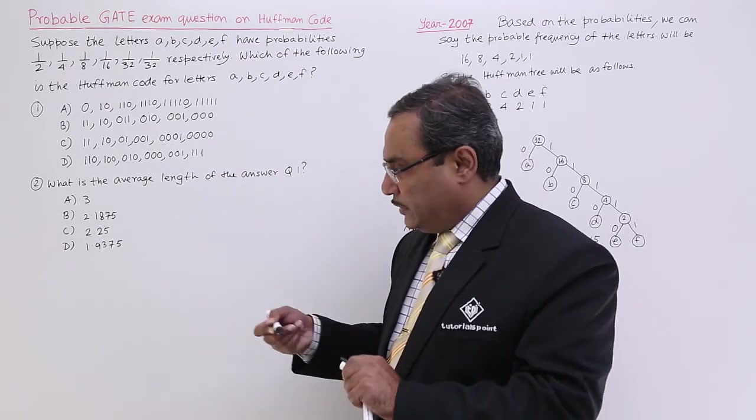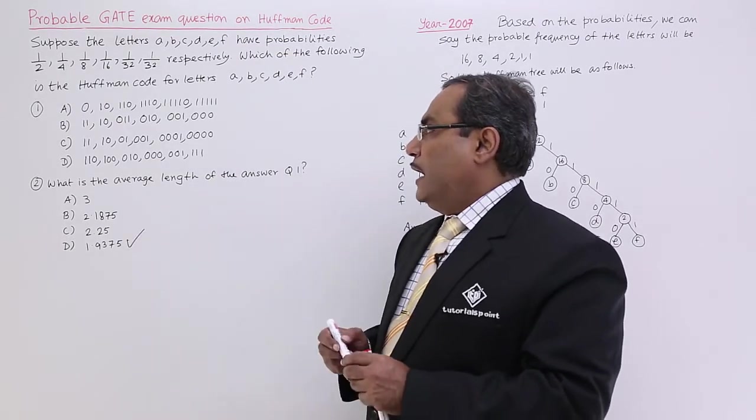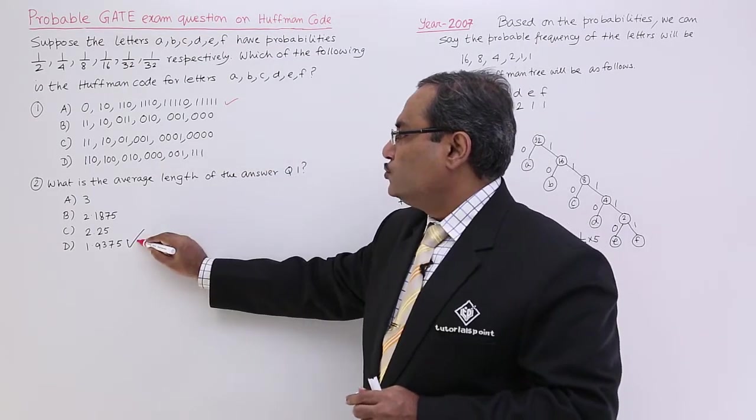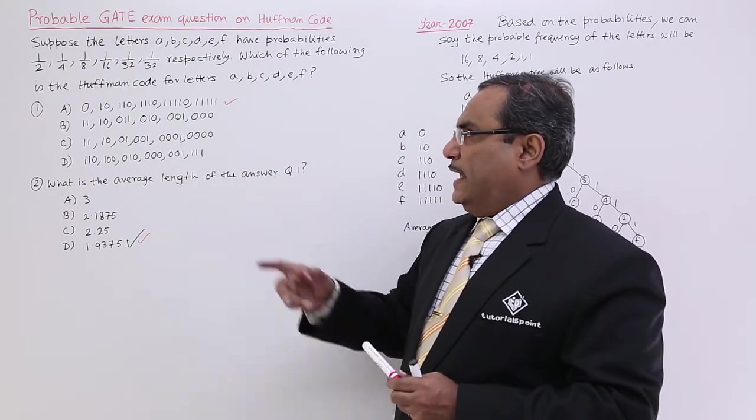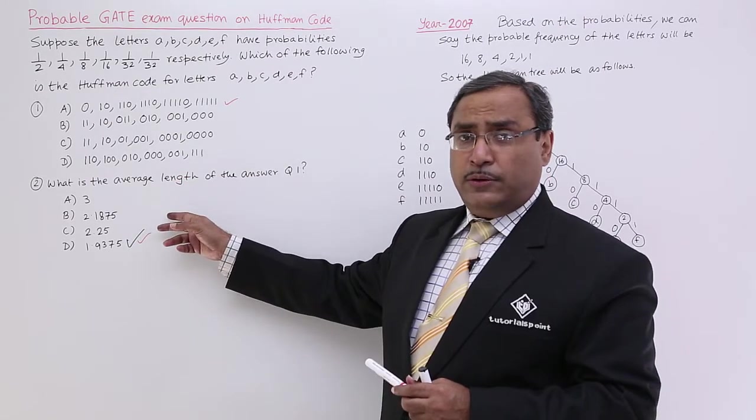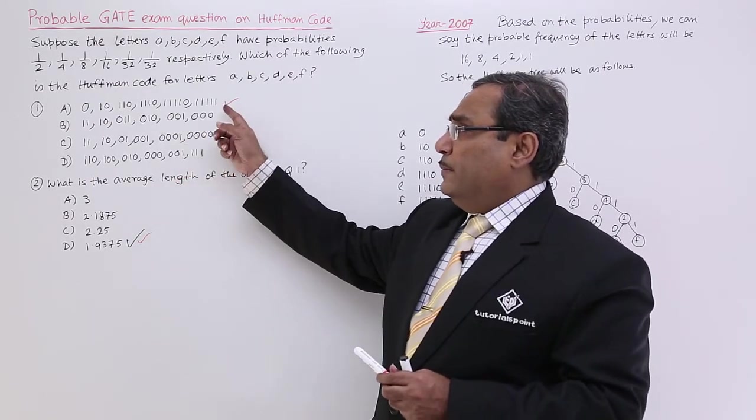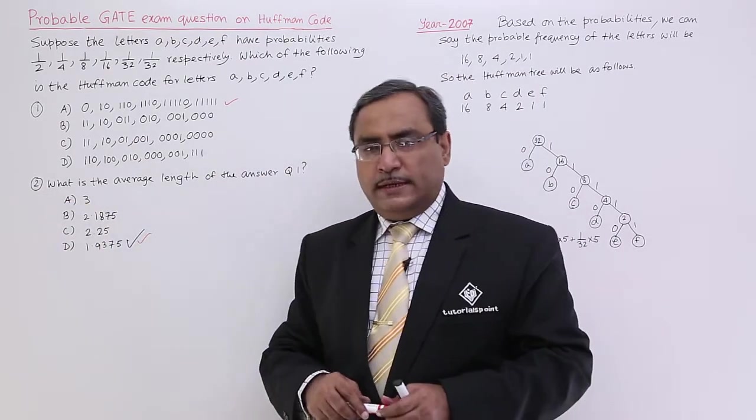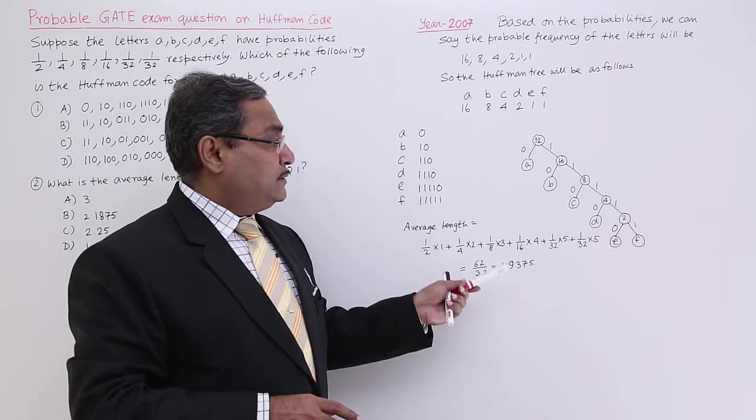It is matching with this particular option. And here in this case, it is matching with this particular option. These two are the answers A and D. This is a linked question, so A will be having this option, this answer, and question number 2 will be having this answer D. In this way the problem has been solved.